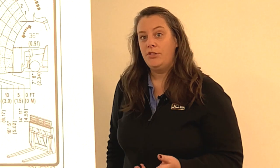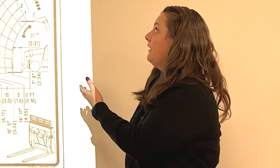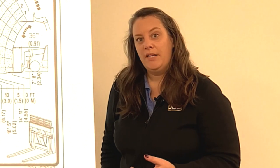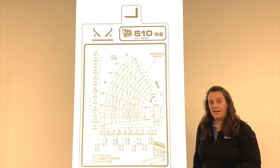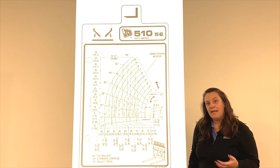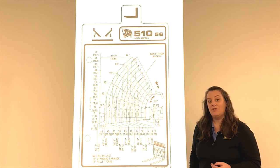If the machine is large enough, like our 510-56, it may have outriggers. And as the operator, you need to know that there's going to be two load charts: one for outriggers up and one for outriggers down. So depending on what you're doing, you need to make sure you're using the right one.